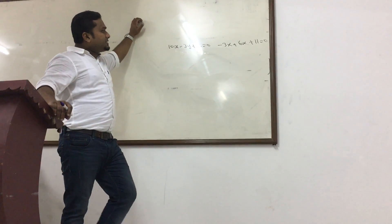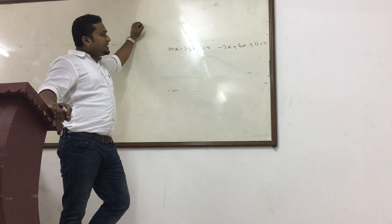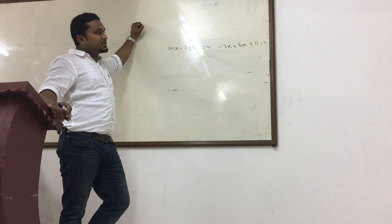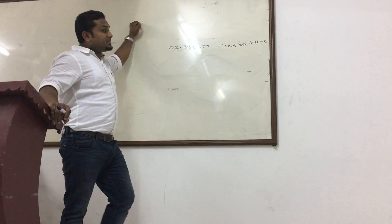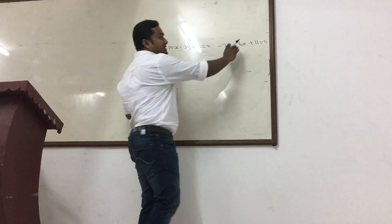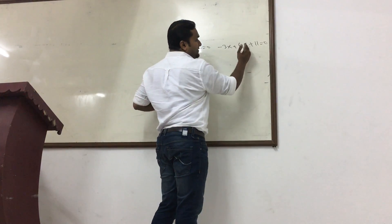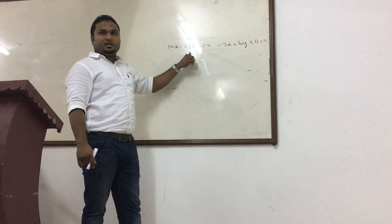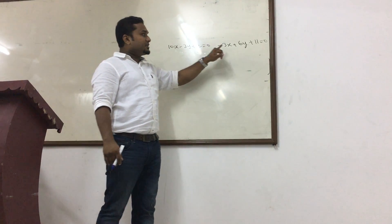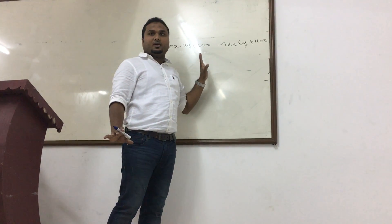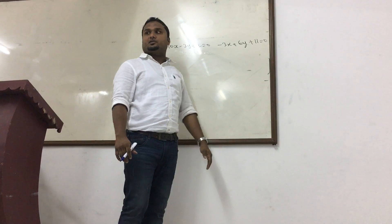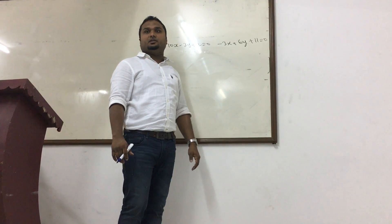X and Y are related by two equations: 10x minus 3y plus 2 equal to 0, and minus 3x plus 6y plus 11 equal to 0. Which is the regression equation Y on X, which is the regression equation X on Y, and what is the correlation coefficient between them?